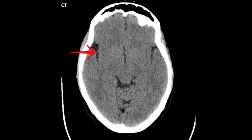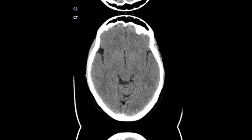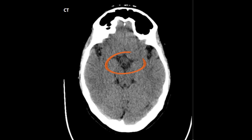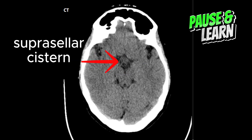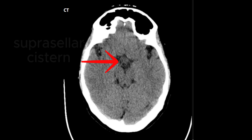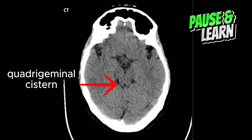This area separating the frontal lobe from the temporal lobe is the sylvian cistern. This cistern lying above the sella turcica is the suprasellar cistern, named according to its location. This W-shaped cistern lying posterior to the midbrain is the quadrigeminal cistern.